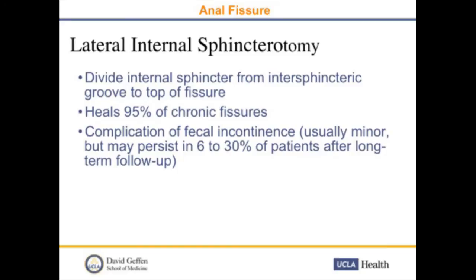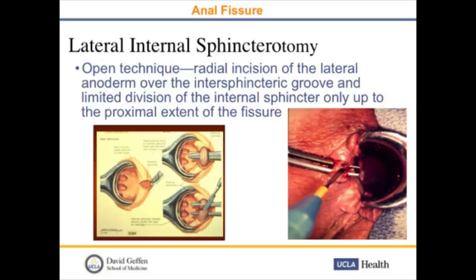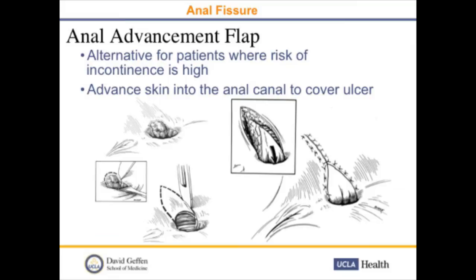Lateral internal sphincterotomy involves dividing the internal sphincter from the intersphincteric groove to the top of the fissure, and it heals 95 percent of chronic fissures. The complications of fecal incontinence are minor, but can occur. With limited sphincterotomy the numbers are much better. The open technique involves making a radial incision of the lateral anoderm over the intersphincteric groove, then limited division of the internal sphincter only up to the proximal extent of the fissure. Previous reports of higher fecal incontinence rates were from when we divided more aggressively. An anal advancement flap is an alternative for patients where the risk of incontinence is high — we advance the skin into the anal canal to cover the ulcer.